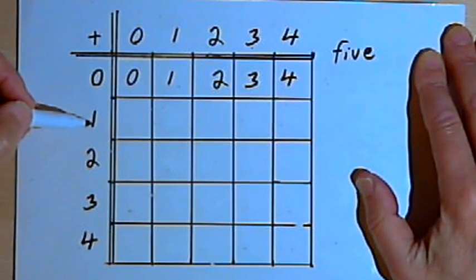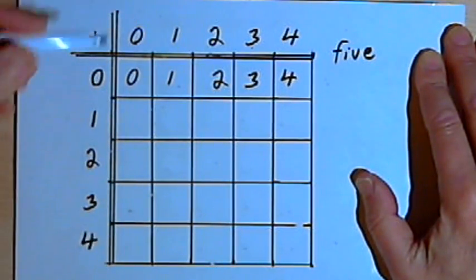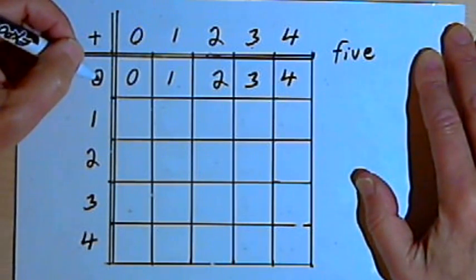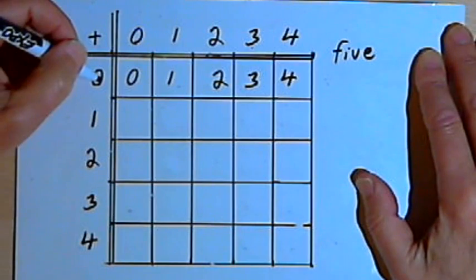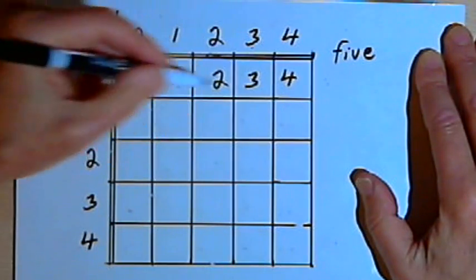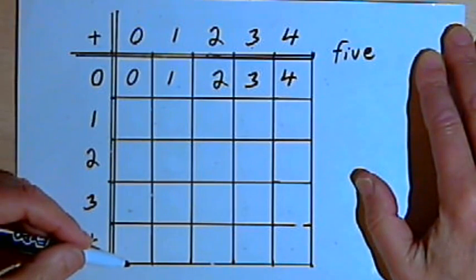Now rather than go to the next row across where we add 1, I'm going to go down the first column. Because remember, addition is commutative. That means if you're adding two numbers, it doesn't matter what order you add them in. So whatever I get in, let's say, the 0 row going across, I should also get in the 0 column going down.